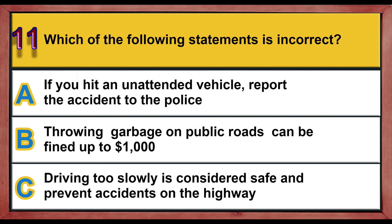Question 11. Which of the following statements is incorrect? A. If you hit an unattended vehicle, report the accident to the police. B. Throwing garbage on public roads can be fined up to $1,000. C. Driving too slowly is considered safe and prevents accidents on the highway. Correct answer is C: Driving too slowly is considered safe and prevents accidents on the highway.